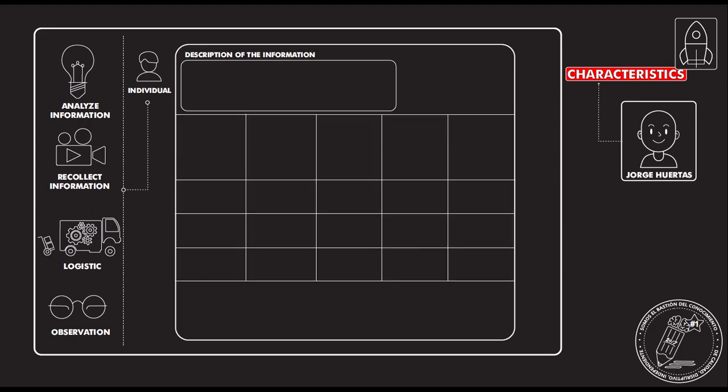So this is the matrix. You start by describing what kind of recollection are you going to take. That is very important. So the description of the information. You start writing and you will say what is the purpose. Are you going to test a prototype? Are you going to follow a possible user in their daily basis? What are you going to do?